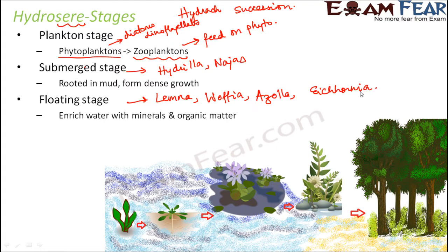These plants with floating leaves cover the water surface completely. They also enrich the water with minerals and organic matter, making it more favorable for the growth of further organisms.